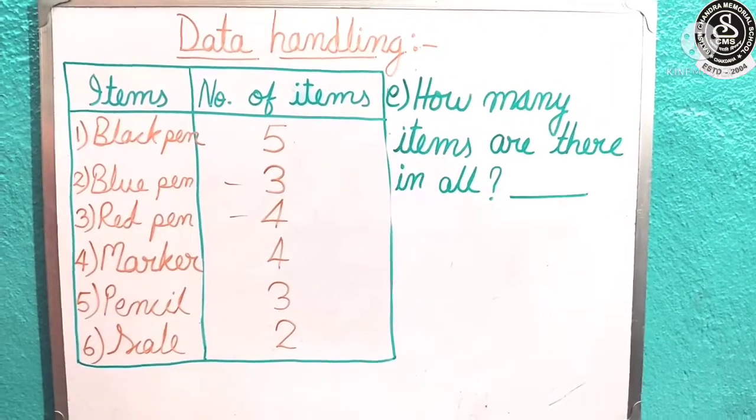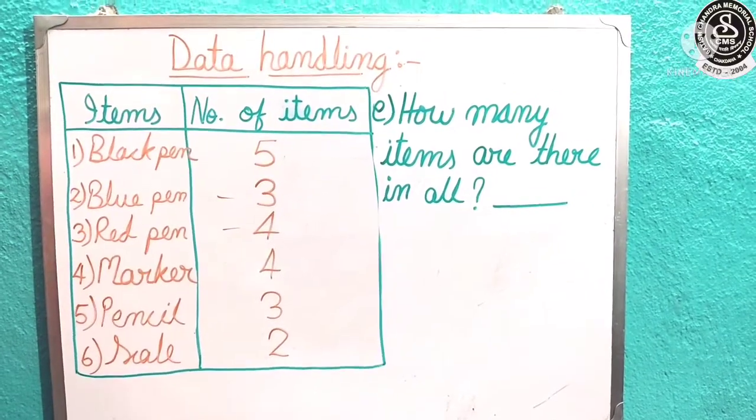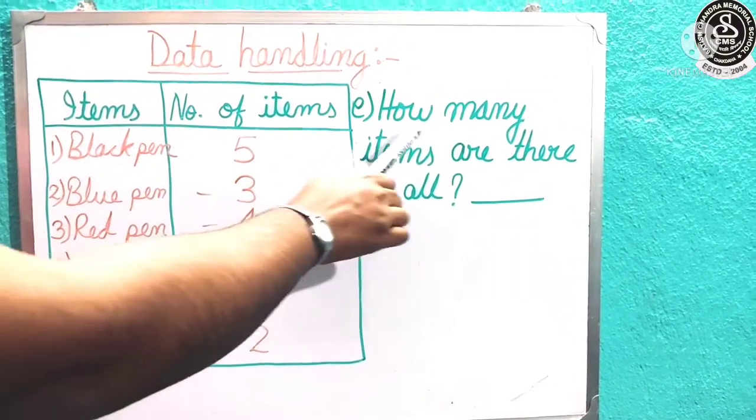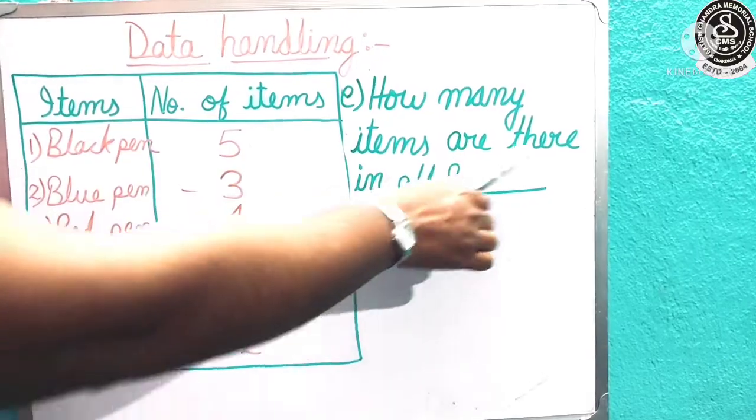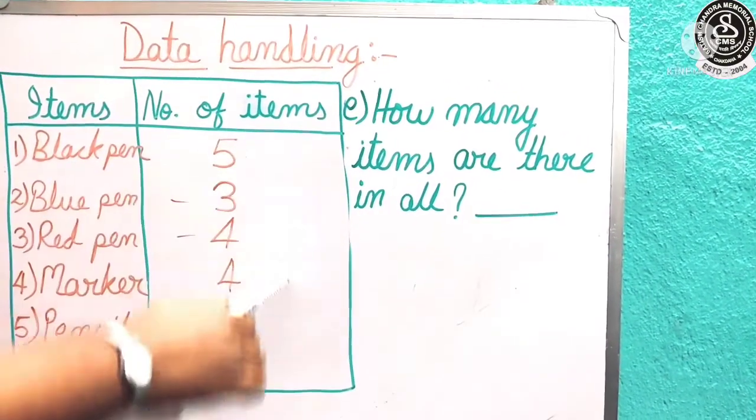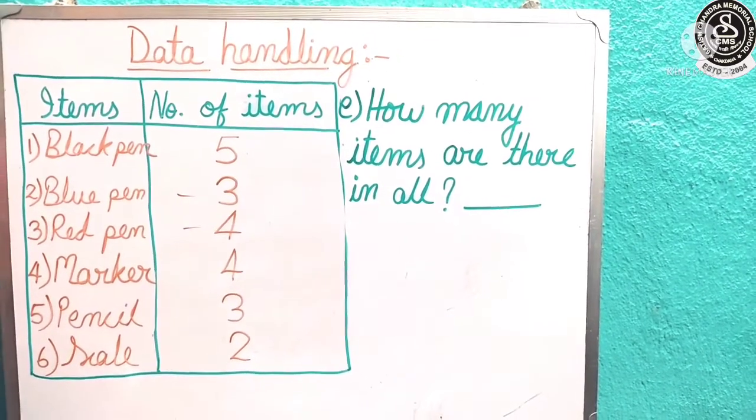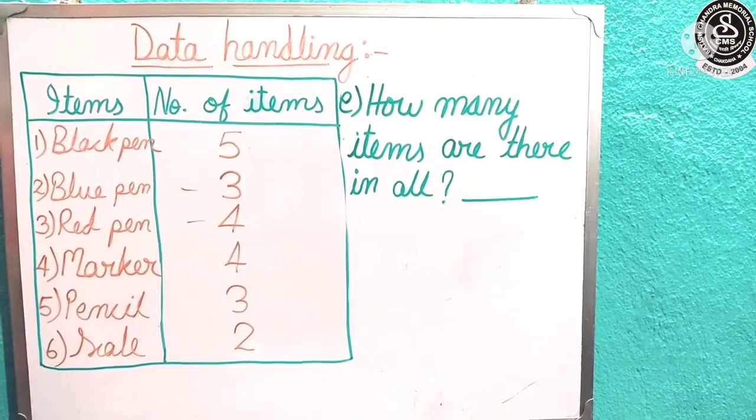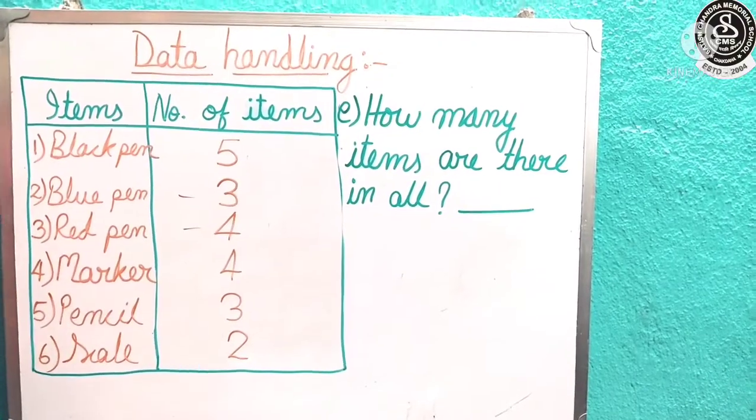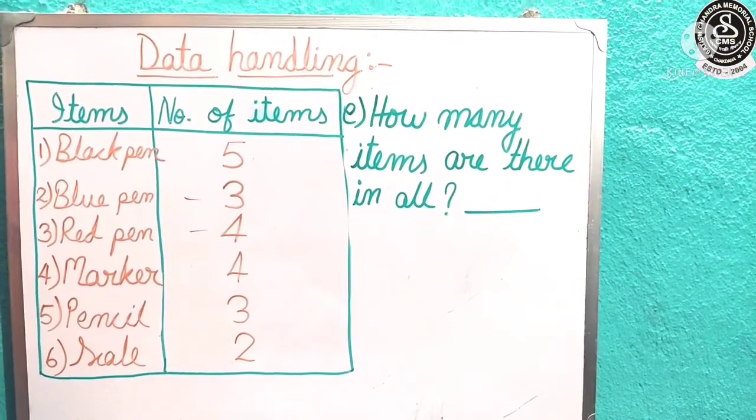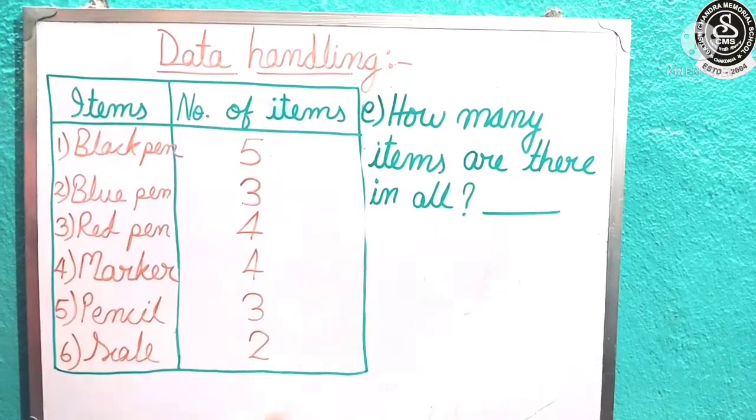And the last question number E. Question number E: How many items are there in all? All means how many total number of items we got? That one we have to find out children. What we will do to find out the total number of items? Yes, we are doing the addition. Children, for finding the total, let us add all the numbers.